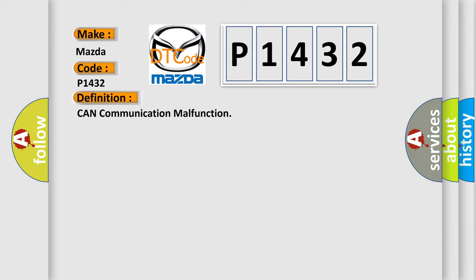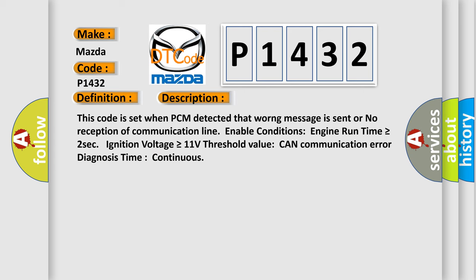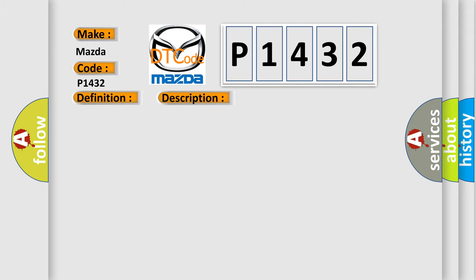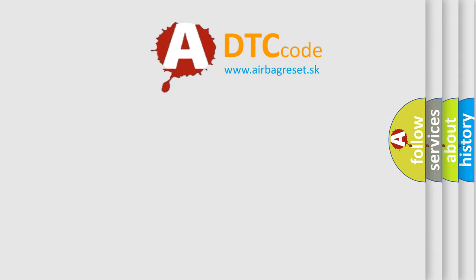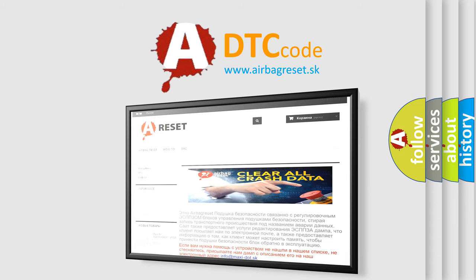And now this is a short description of this DTC code. This code is set when PCM detected that wrong message is sent or no reception of communication line. Enable conditions: engine run time is greater than or equal to 2 seconds, ignition voltage is greater than or equal to 11 volts. Threshold value: CAN communication error diagnosis time continuous. This diagnostic error occurs most often in these cases: CAN bus CAN communication module component. The Airbag Reset website aims to provide information in 52 languages. Thank you for your attention and stay tuned for the next video.